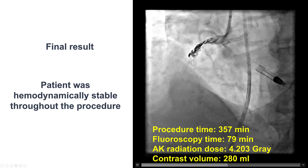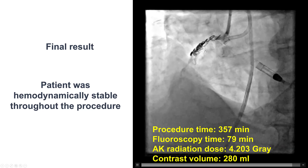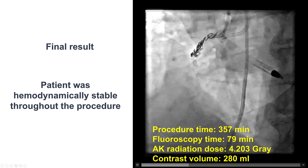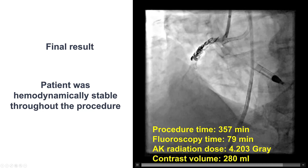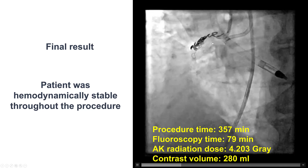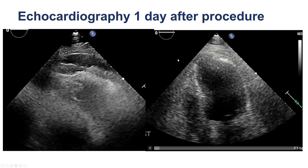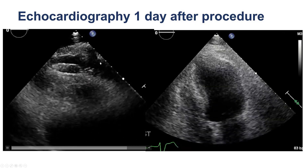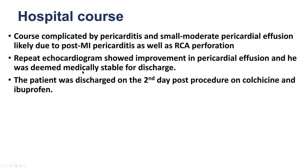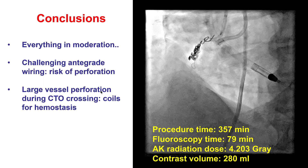This was the final result. The patient was stable throughout the procedure. The coil protruded slightly back into the proximal right coronary artery — ideally it should have been packed a little more tightly. Echo one day later showed the small effusion was stable. The patient had some chest discomfort suggestive of pericarditis, but he improved and was discharged two days later on colchicine and ibuprofen.